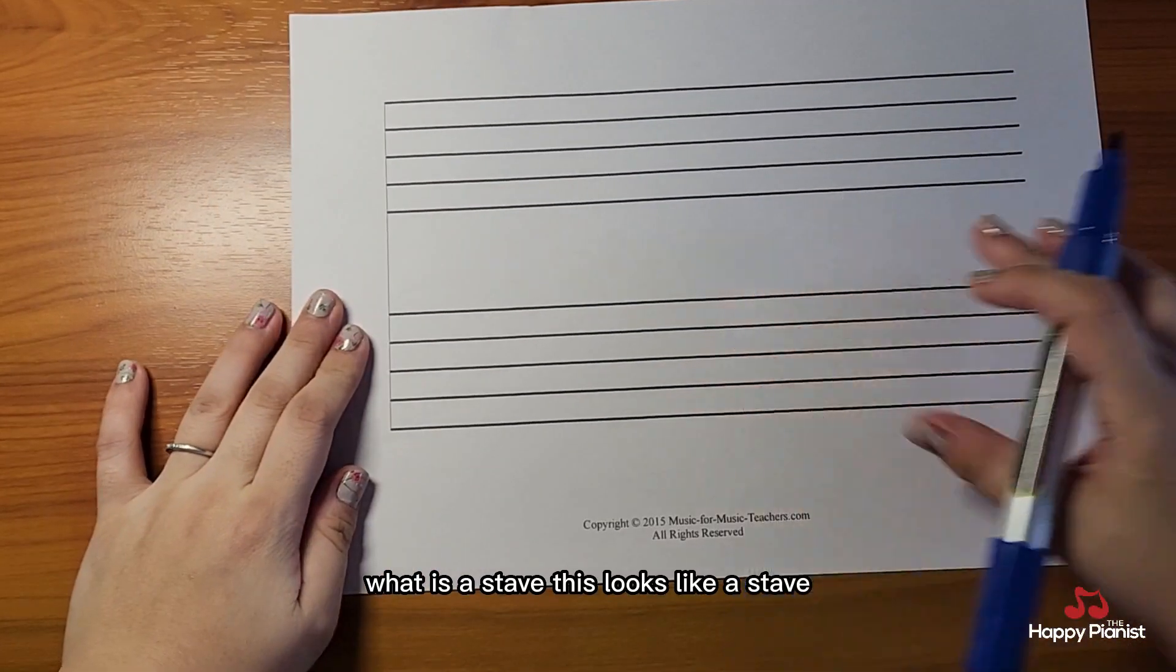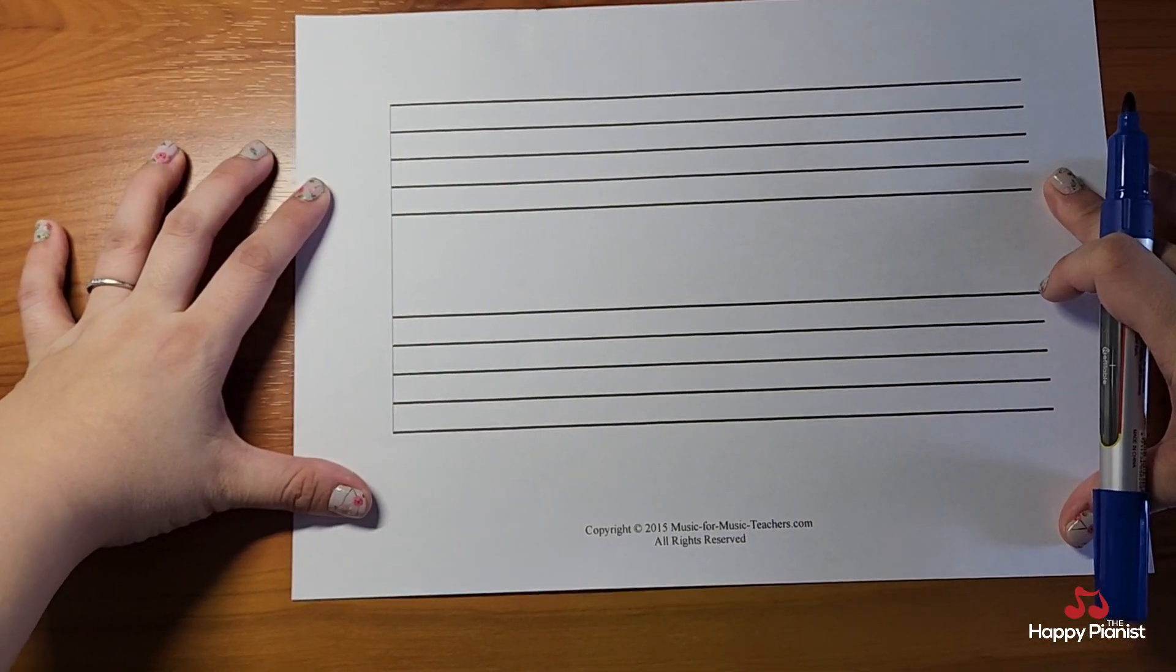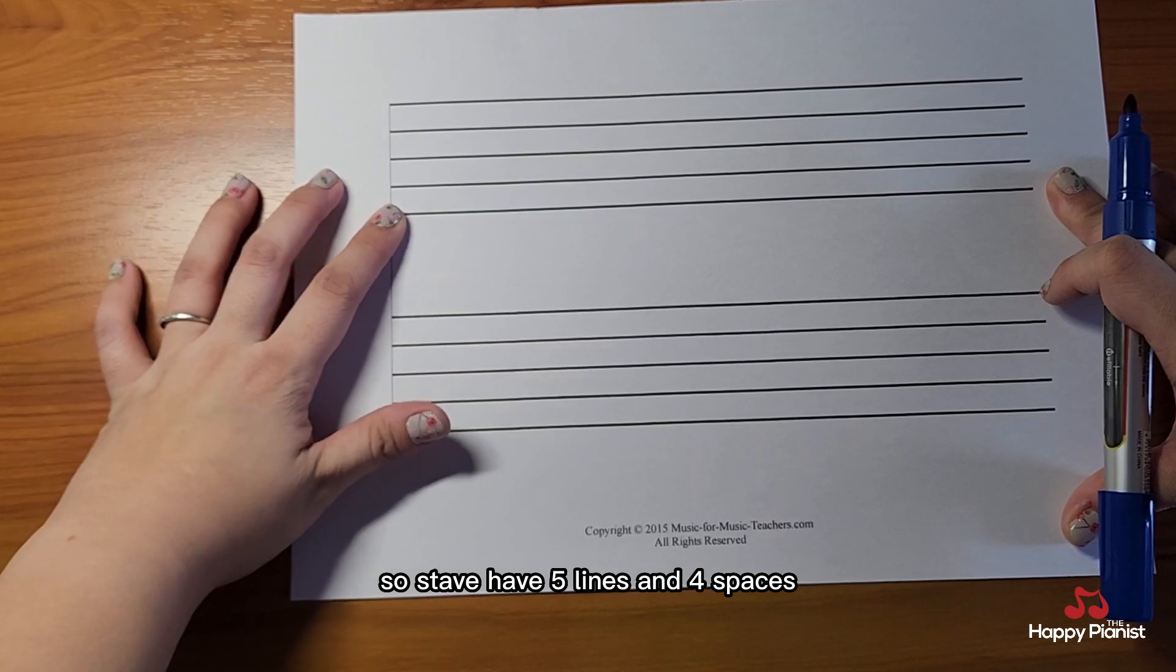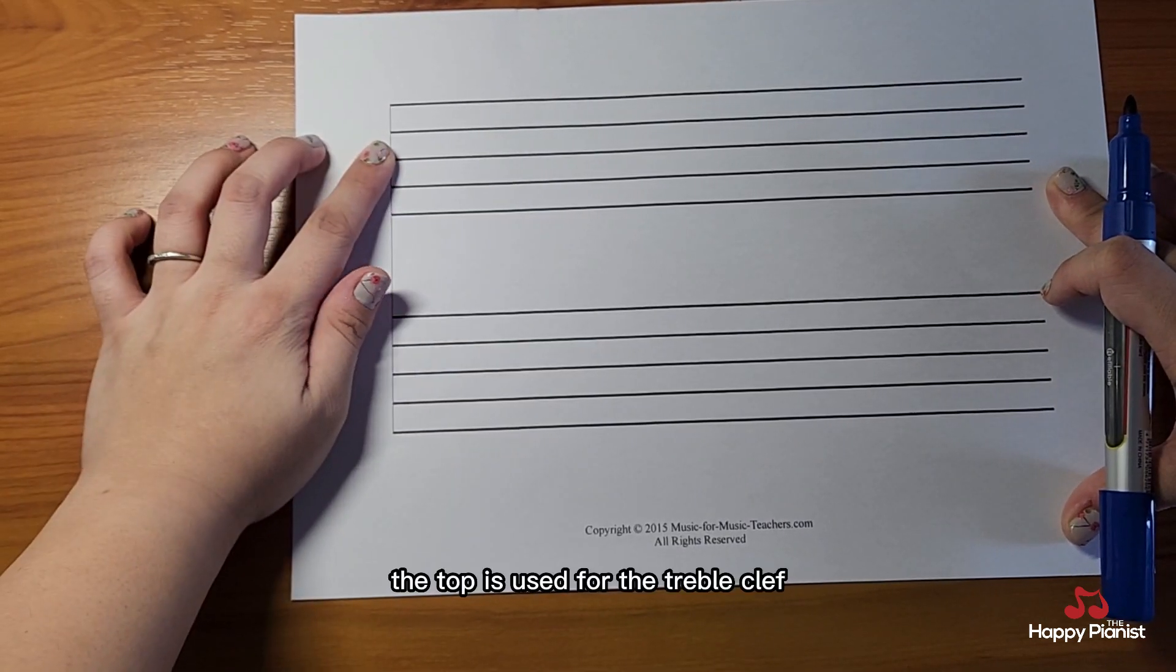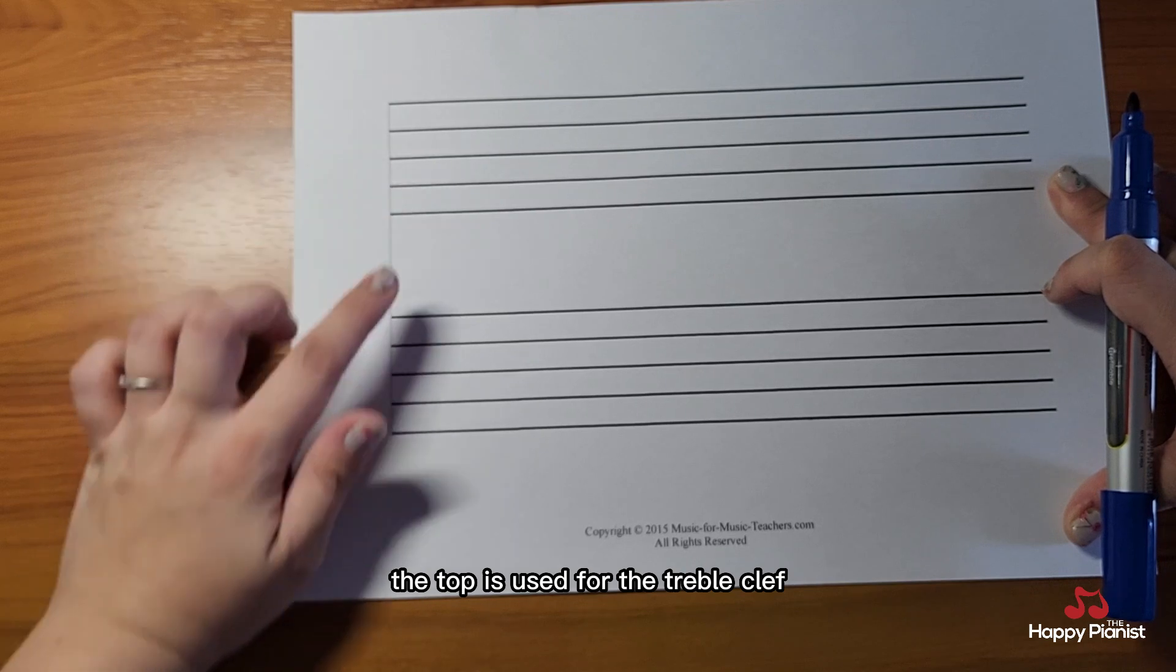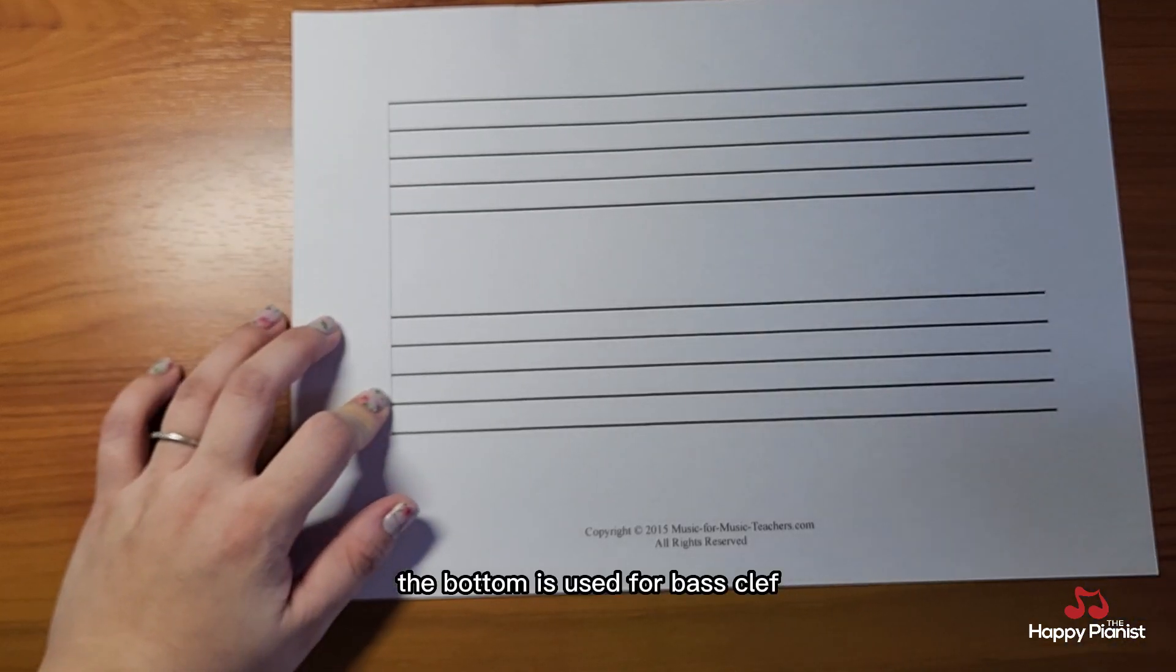What is a staff? This looks like a staff. Staff have five lines and four spaces. The top is used for the treble clef, the bottom is used for bass clef.